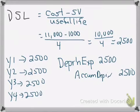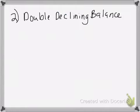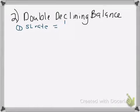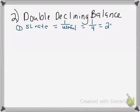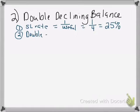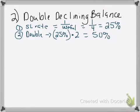The other type we can do is double declining balance, which takes a little more effort than straight line. The first thing we have to do is find the straight line rate: we take 1 divided by the useful life. In this case, 1 divided by four years gives us 25% as our straight line rate. The second thing we do is double that rate — 25% multiplied by 2 gives us 50% as our double declining balance rate.